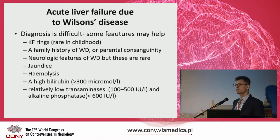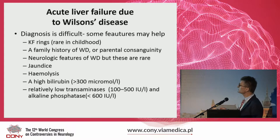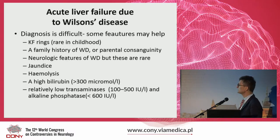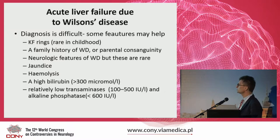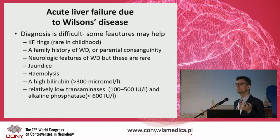Acute liver failure is really a challenge for us liver persons because we have to make the diagnosis very quickly to make the right decision on therapy, and some symptoms may help. Presentations like Kayser-Fleischer rings may help to make the diagnosis, or family history of Wilson disease, or some neurological features if they are present. Jaundice and hemolysis are quite common in Wilson disease presentation. Usually these patients present with highly increased bilirubin and relatively low transaminases compared to the severe presentation, so it may help but will not allow us to make the final diagnosis.